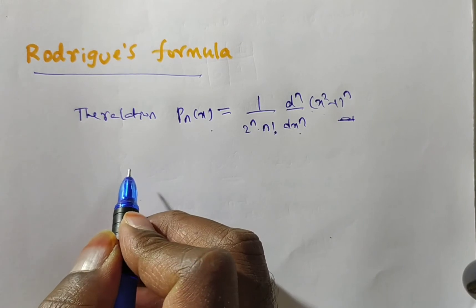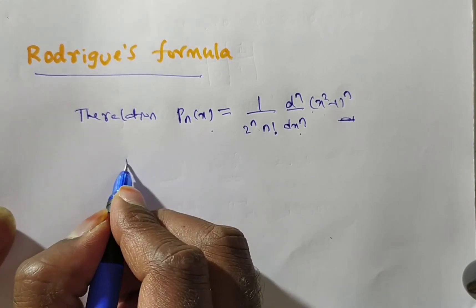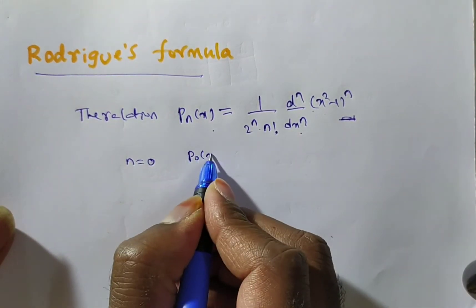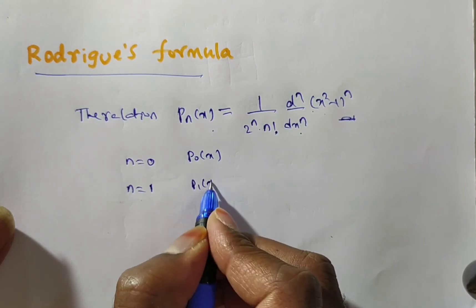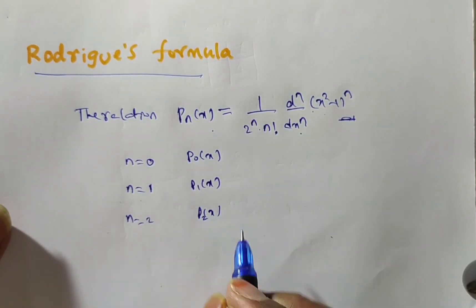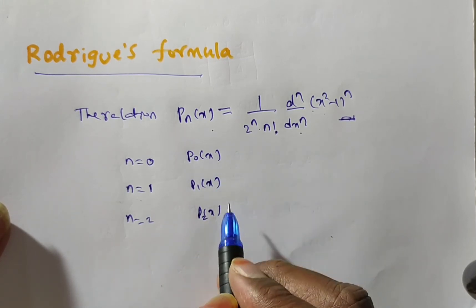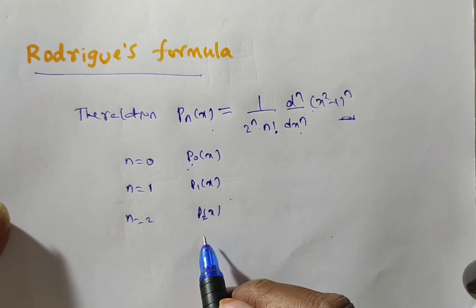From Rodrigues' formula, we will get the Legendre polynomials by substituting n equals 0, we will have P_n(x). If you put n equals 1, P_1(x); n equals 2, P_2(x). These are called Legendre polynomials at n equals 0, n equals 1, n equals 2.